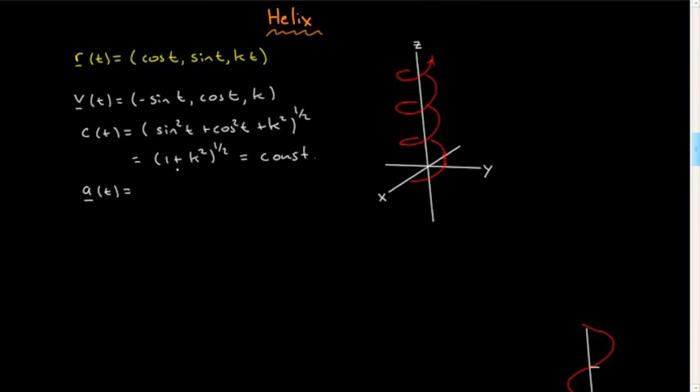Differentiate one more time and we get a(t) = (-cos t, -sin t, 0). So there's no component of acceleration in the z direction. In principle, I would like to plot some of those vectors in this diagram.